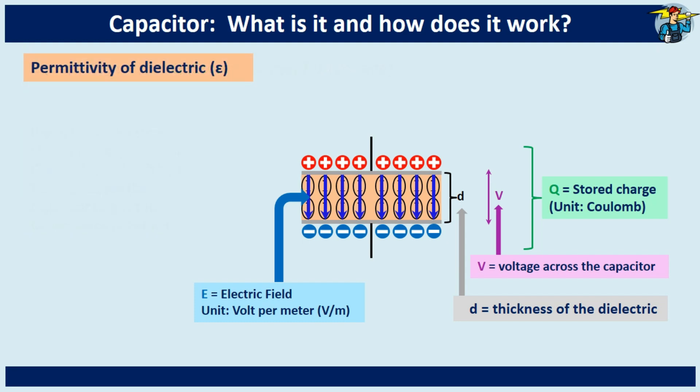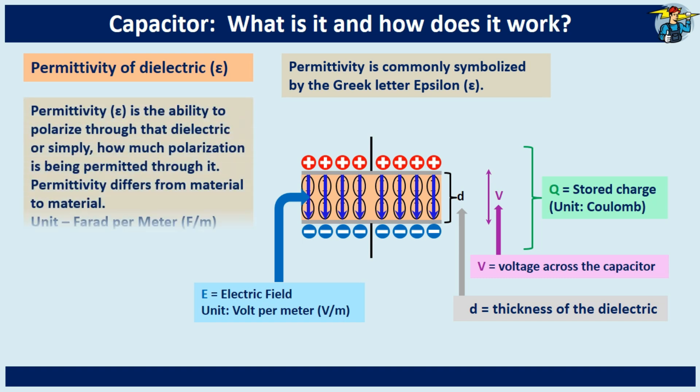Further, you can get the capacitance by physical means of the used material, and you need to know about the permittivity then. Permittivity is commonly symbolized by the Greek letter epsilon. Permittivity is the ability to polarize through the dielectric, or simply how much polarization is being permitted through it. It differs from material to material, and the unit is measured by farad per meter.